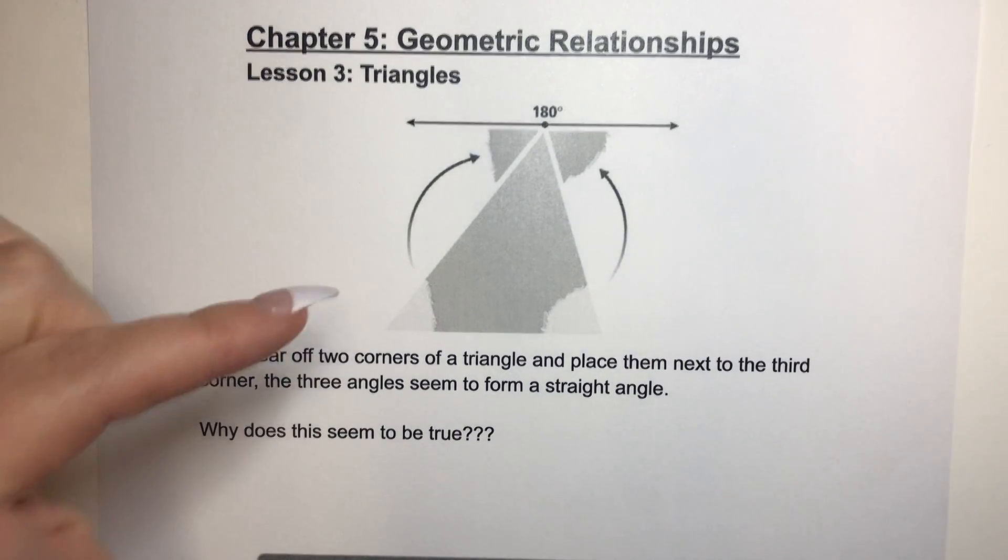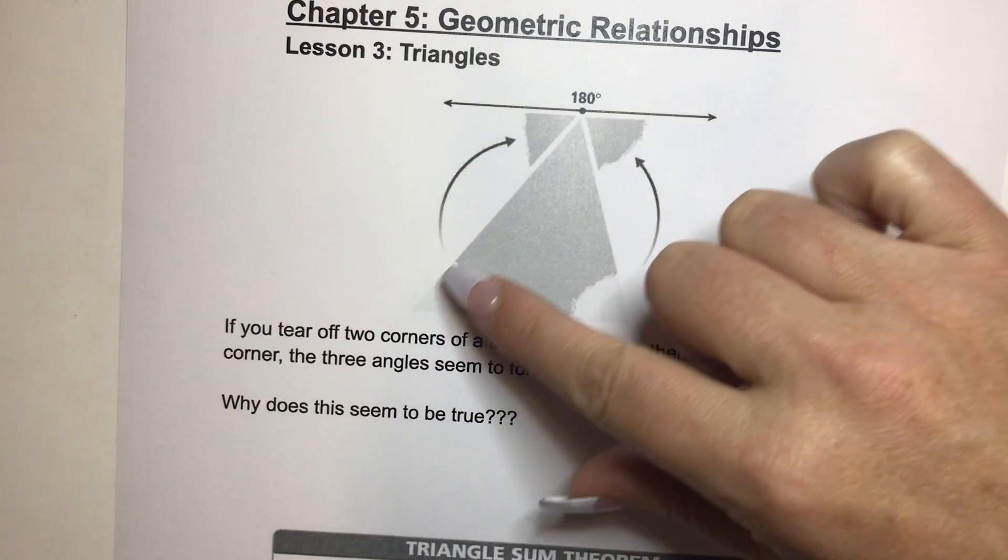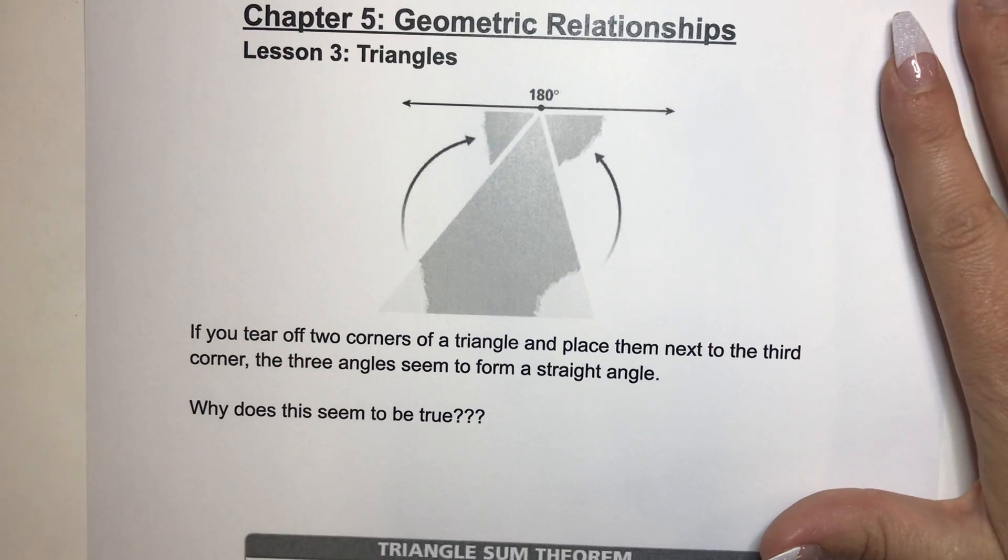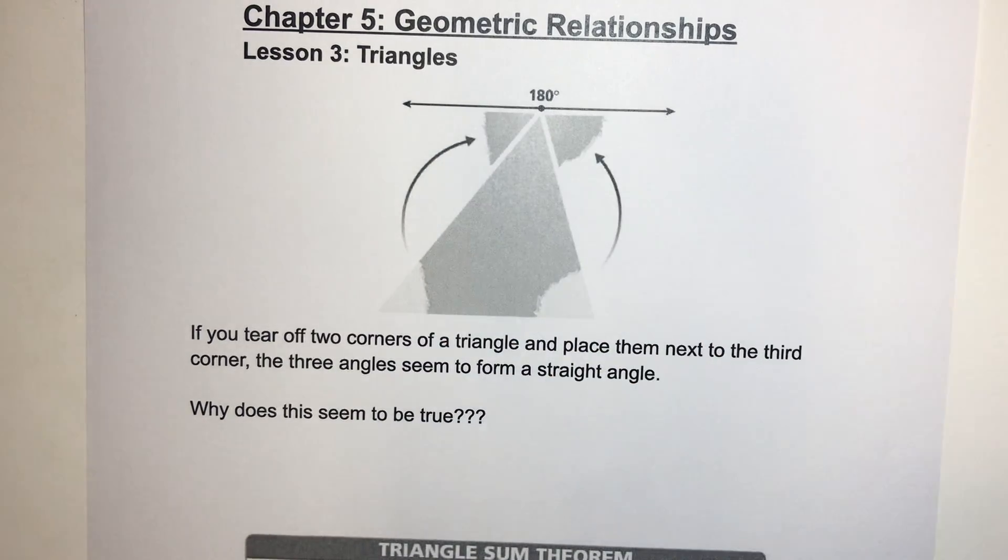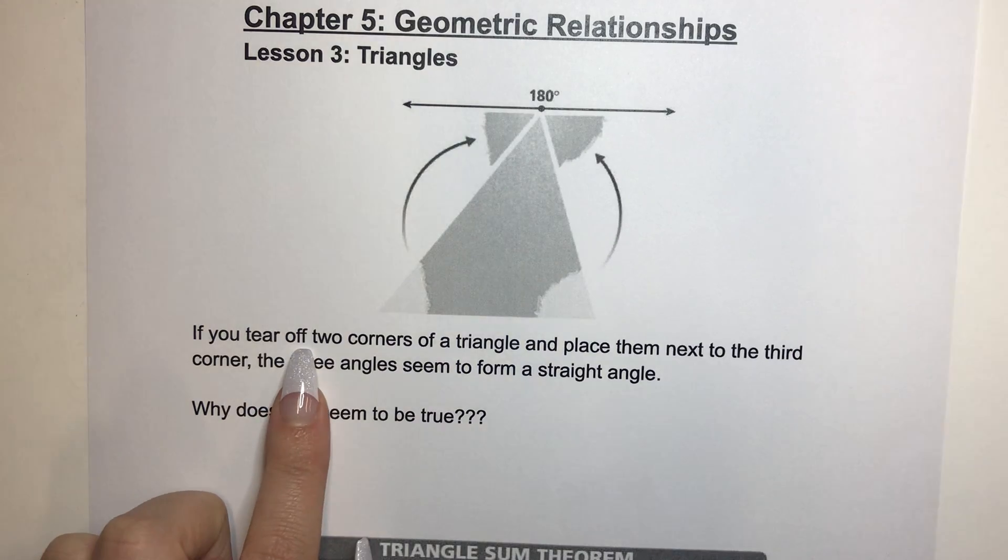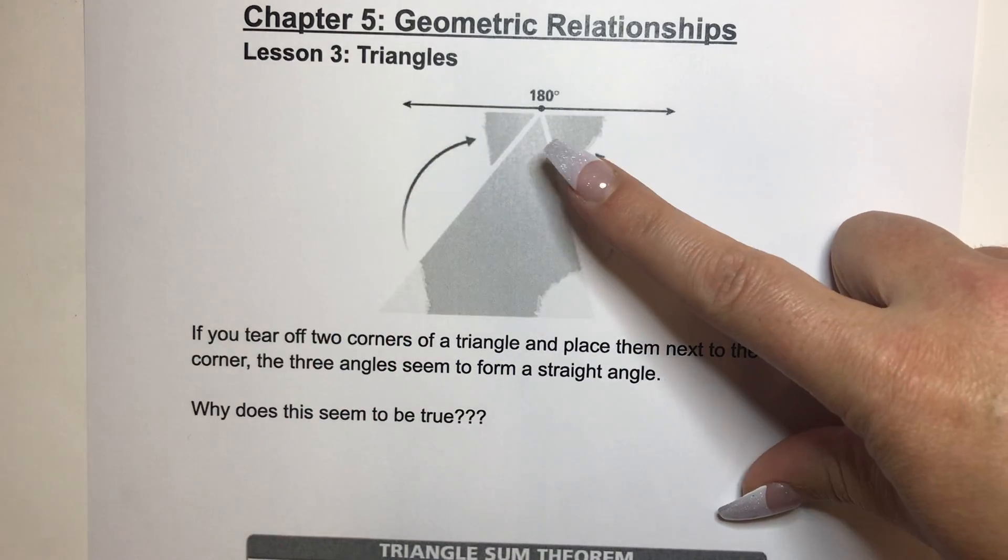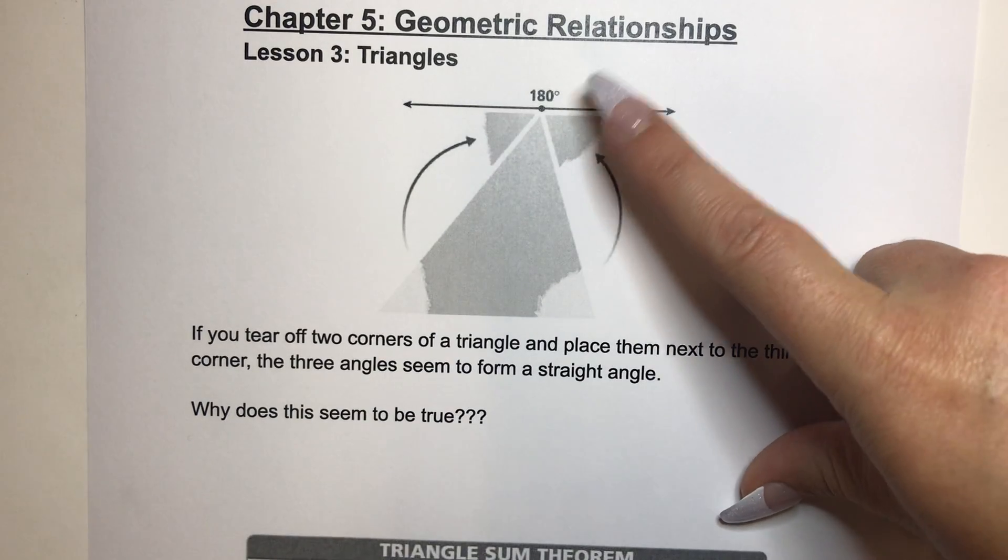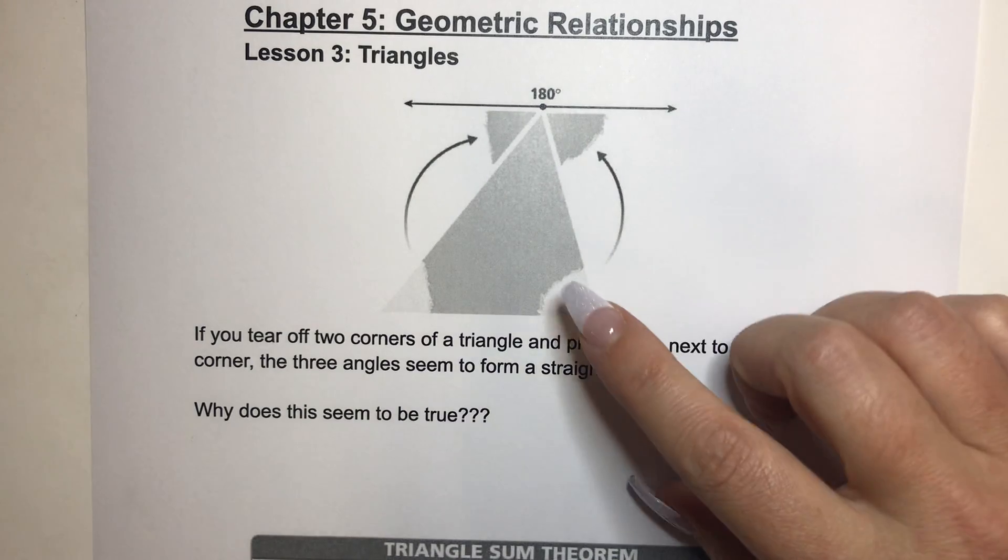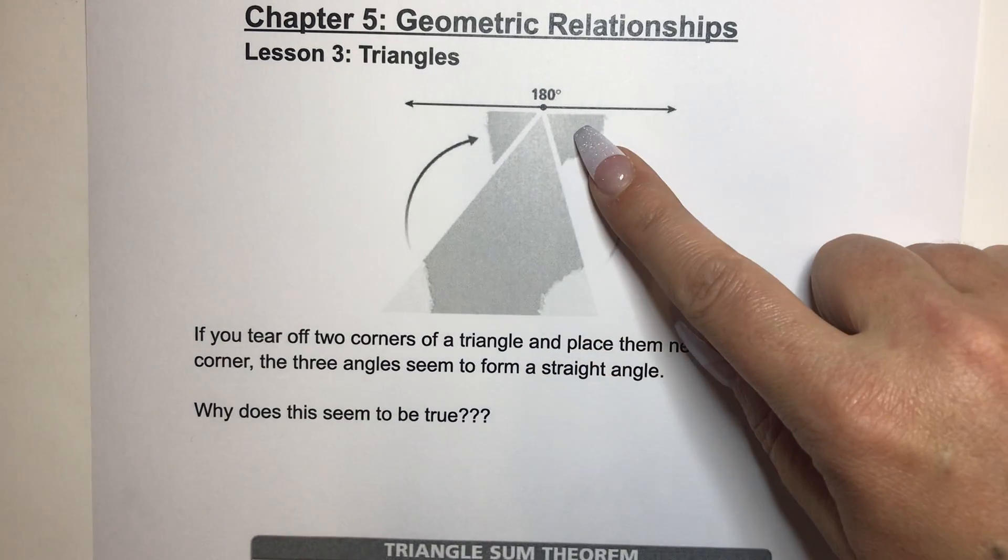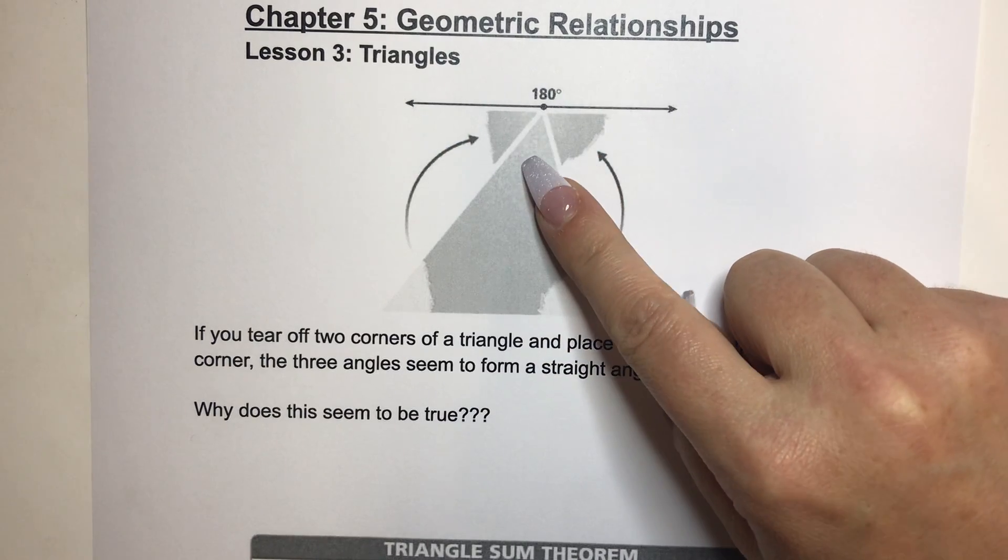So there's this little picture here, and can you see how there's a triangle right here? And what it looks like is that they tore off the corners of this triangle and then put them up there. It says if you tear off two corners of a triangle and place them next to the third corner, the three angles seem to form a straight angle.